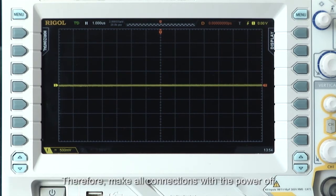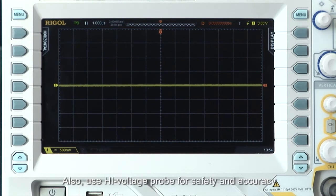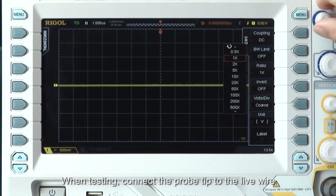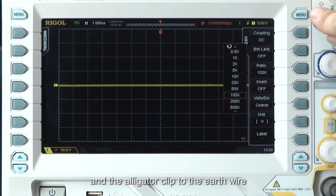Therefore, make all connections with the power off. Also, use high voltage probes for safety and accuracy. When testing, connect the probe tip to the live wire and the alligator clip to the earth wire.